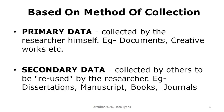The next classification of data type is based on the method of collection. Based on the method of collection, there are two basic types: primary data and secondary data. Primary data are those data collected by the researcher themselves for the first time, for their own purpose.